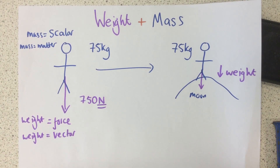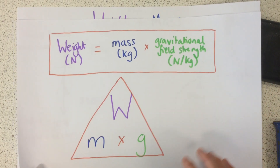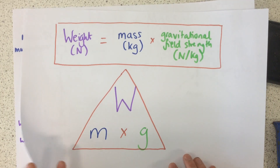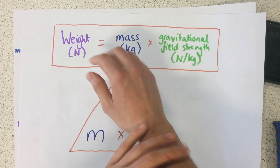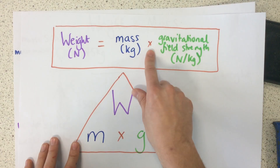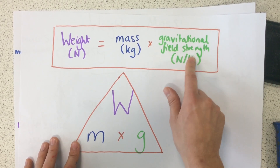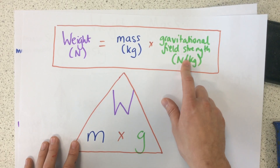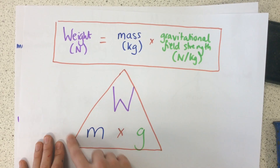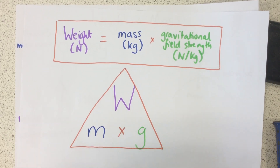Now let's look at the equation for weight, mass, and gravitational field strength. Weight equals mass multiplied by the gravitational field strength — the strength of gravity in that particular part of the universe. This can be summarised with the equation triangle: weight equals mass times gravitational field strength.